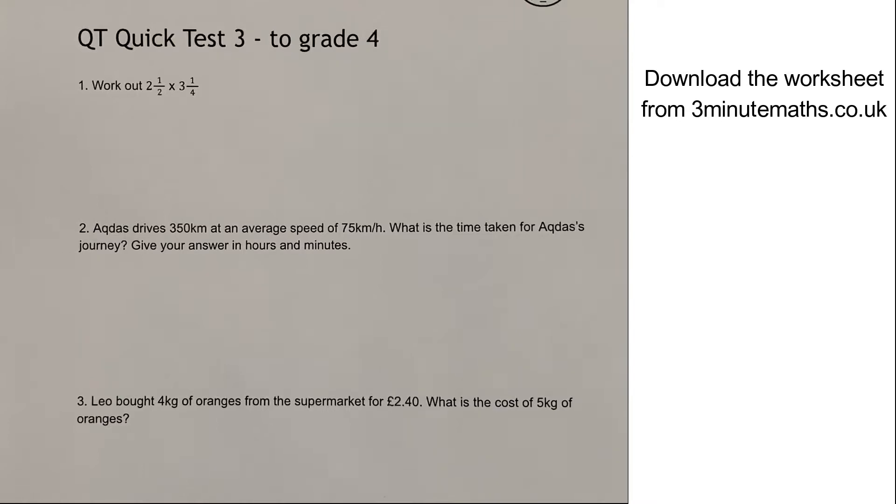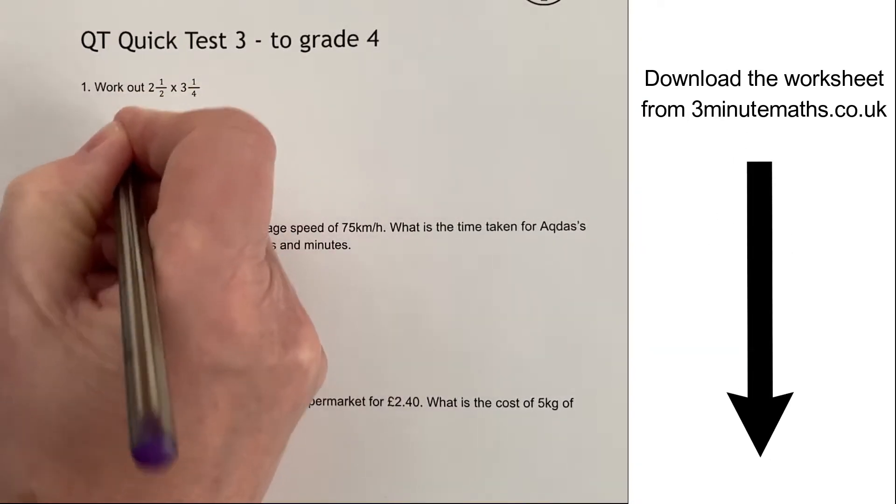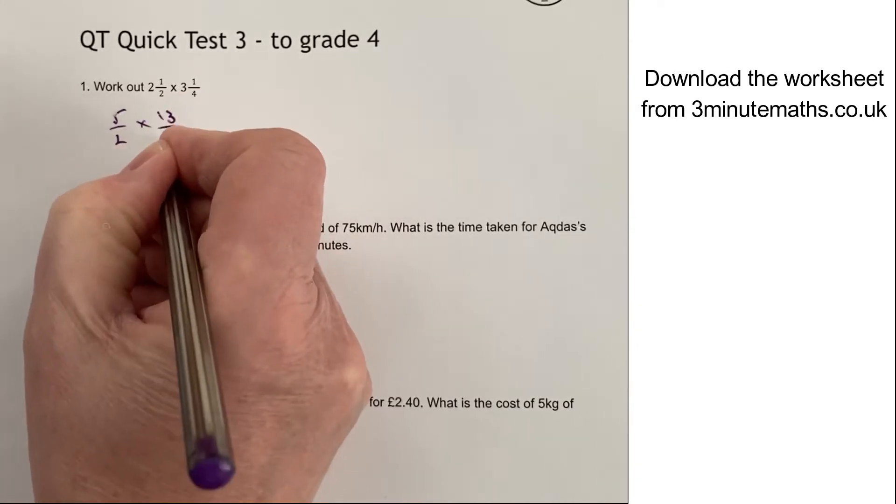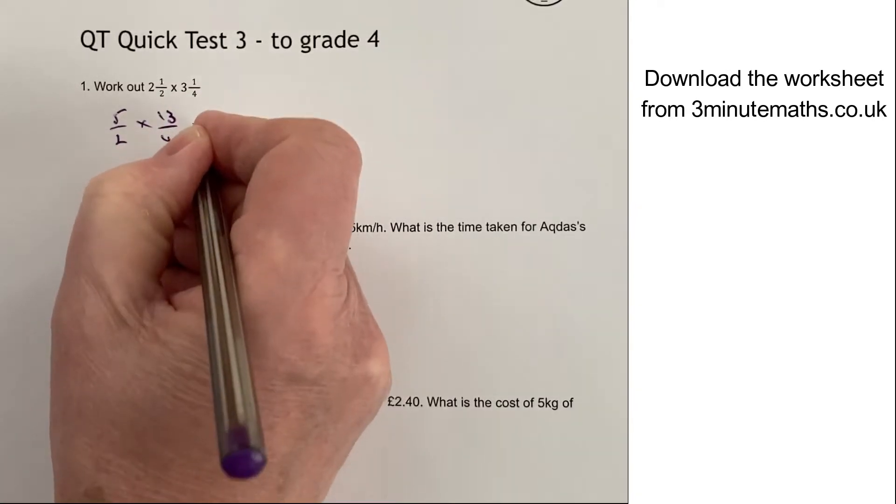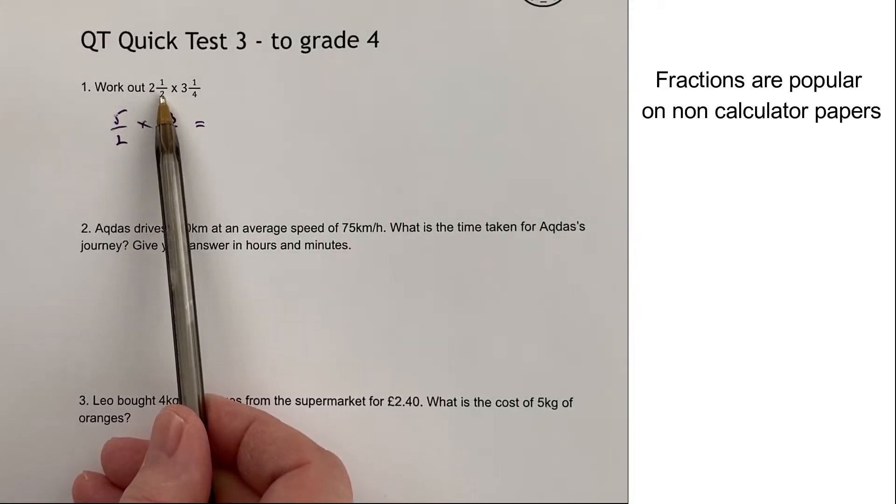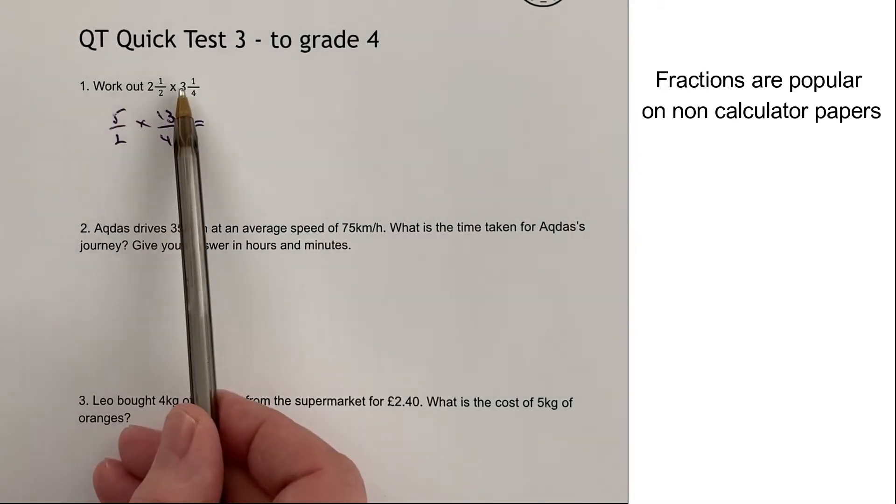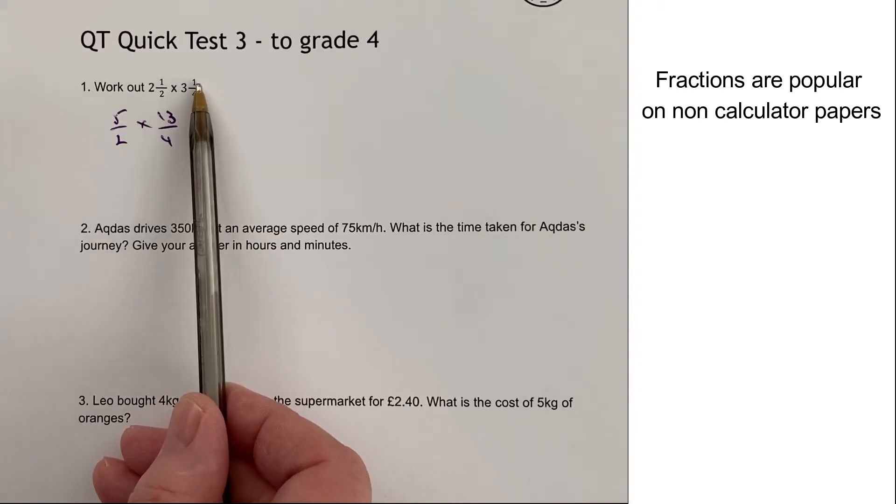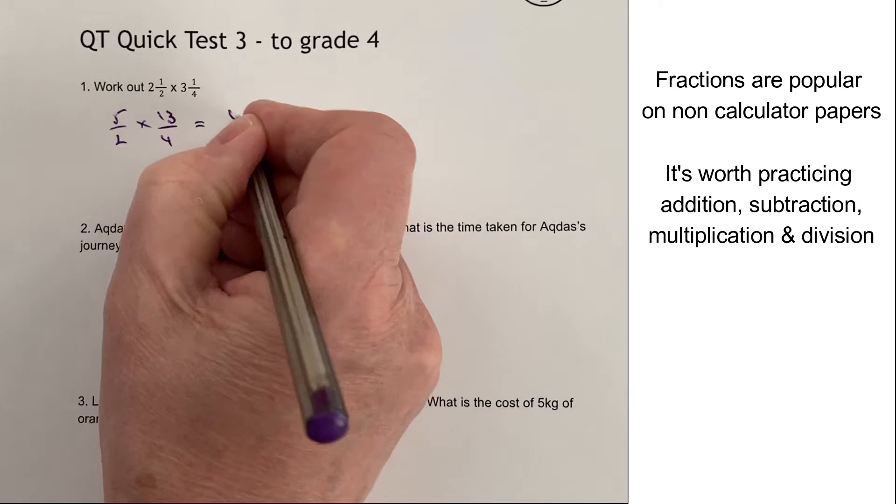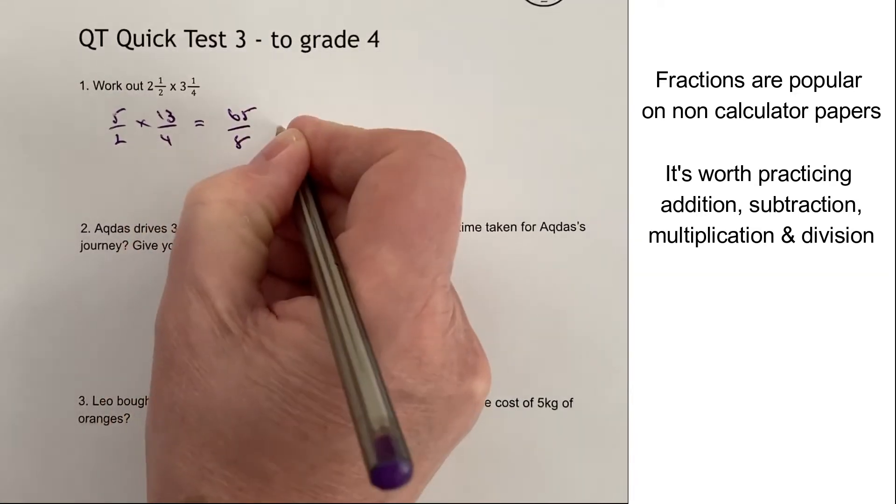Okay, so on to question number one, which is a mixed number multiplication. So with these, it's probably easier to convert them into top heavy or improper fractions. That becomes 5 over 2 multiplied by 13 over 4. The way I've done that is I've said 2 times 2 is 4 plus 1 is 5, or 3 times 4 is 12 plus 1 is 13. And then it's really a case of multiplying across, that gives me 65 over 8.